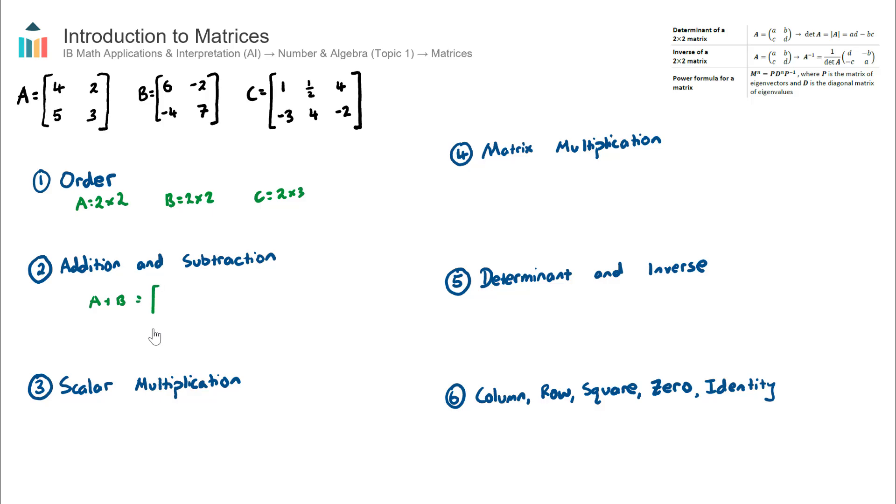Now I can add these two matrices together because they are both a 2 by 2. And the resultant matrix will also be a 2 by 2. The result will also be the same order as the two that are being added or subtracted. In this top left cell will be the two top left numbers added to each other, so 4 plus 6, which is 10. Same for the top right, 2 plus negative 2, which is 0. The bottom left, 5 plus negative 4, is 1. And finally, 3 plus 7 is 10. So pretty simple there. Subtraction works exactly the same, except you'll be subtracting the numbers.